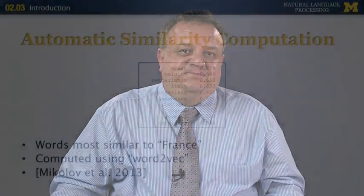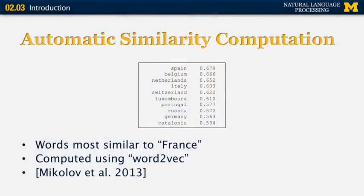This kind of data set can be used to train natural language systems, and can also be used to evaluate systems that automatically compute text similarity. One more example is by Mikolov et al. in a paper published in 2013. He uses the word2vec approach, which I'm going to talk about later, and he was able to compute automatically the words that are most similar to 'France' based on the context in which they appear. Those words are shown in the table, and not surprisingly, the words most similar to France are countries that are near France geographically: Spain, Belgium, the Netherlands, Italy, Switzerland, and so on.